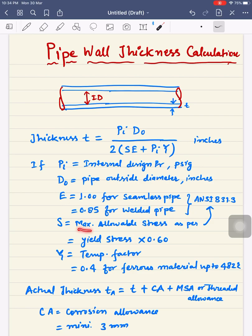S is maximum allowable stress as per ANSI B31.3, which is equal to yield stress times 0.60. This means the piping engineer considers the maximum level stress from 60 to 65 percent of yield stress. This value you can get from ANSI B31.3.